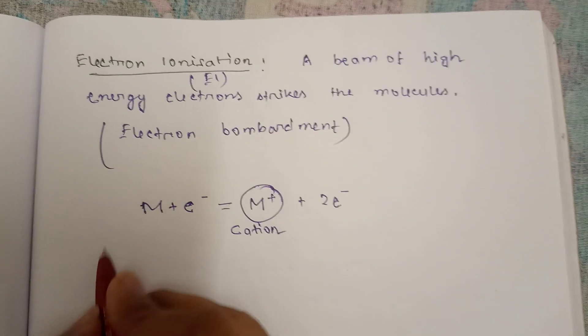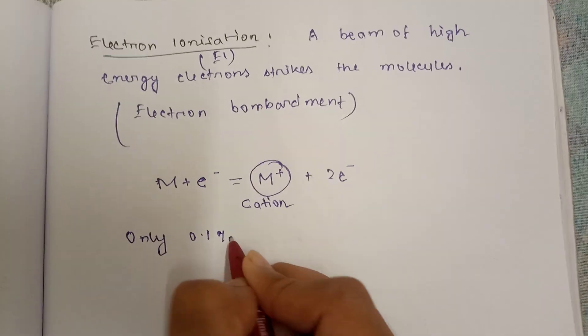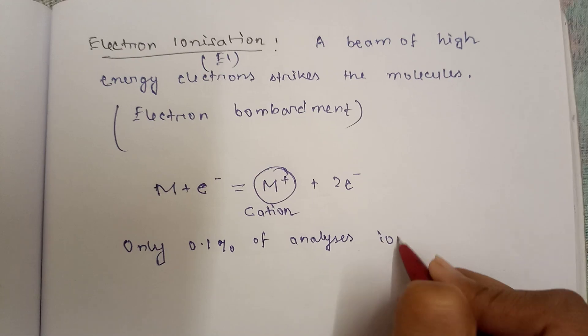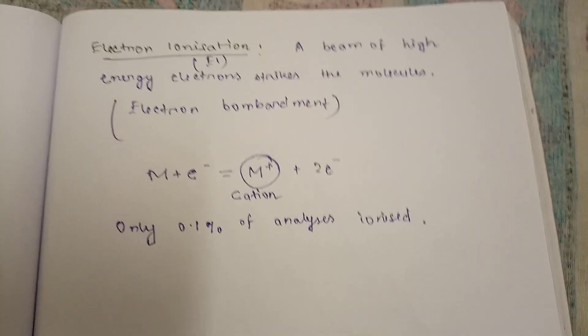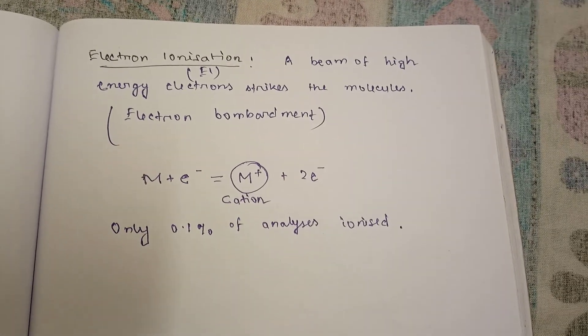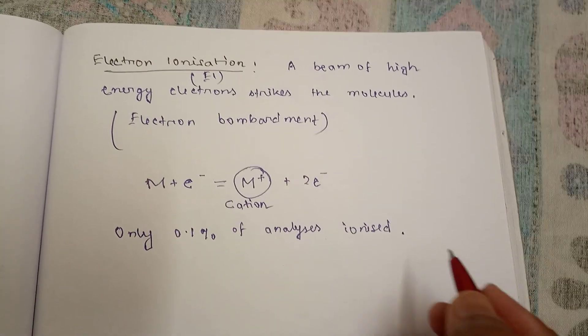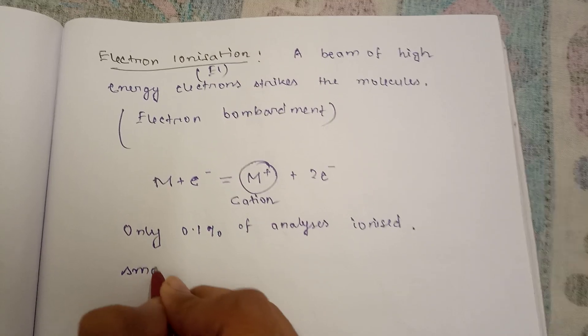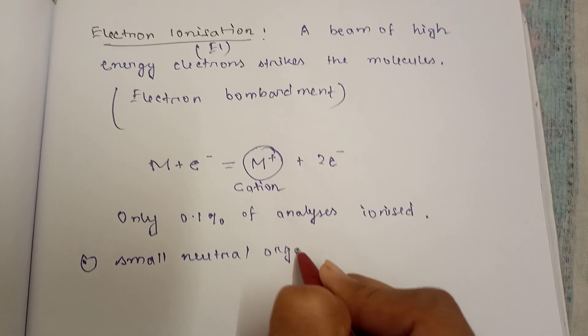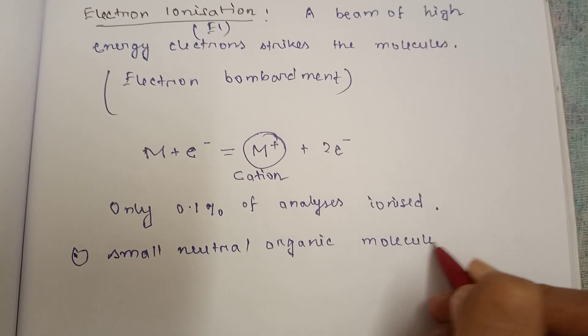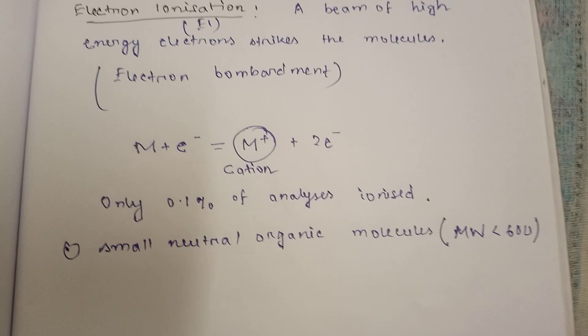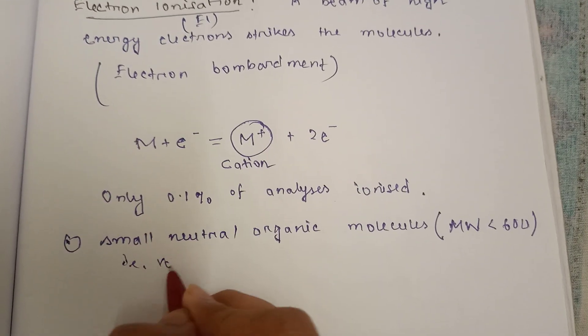In this method only 0.1% of analyte is ionized. This is a very common technique of ionization. It's normally used for relatively small neutral organic molecules, with molecular weight less than 600, for example volatile compounds.